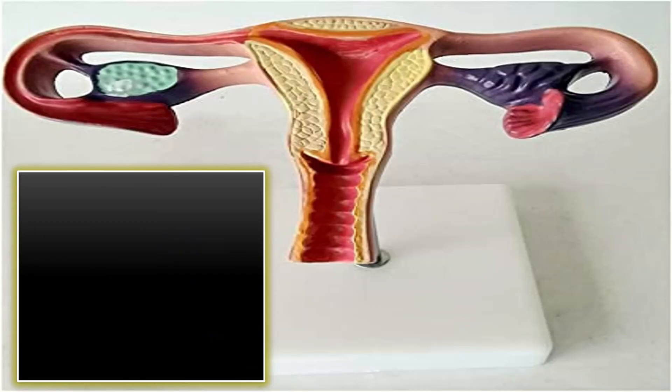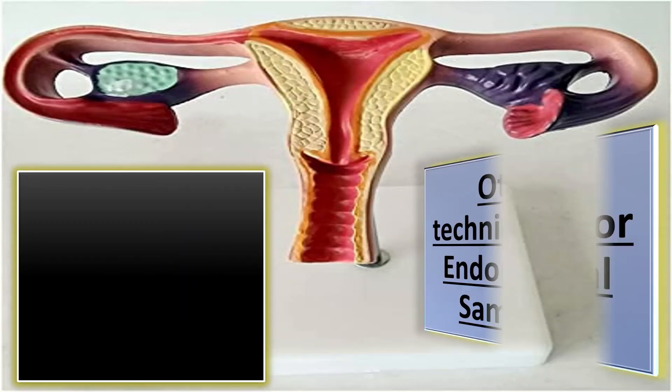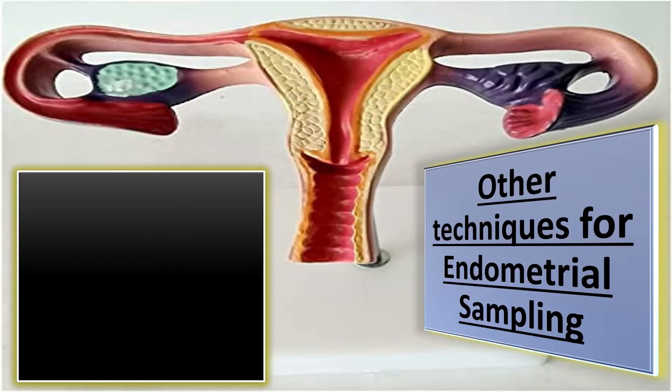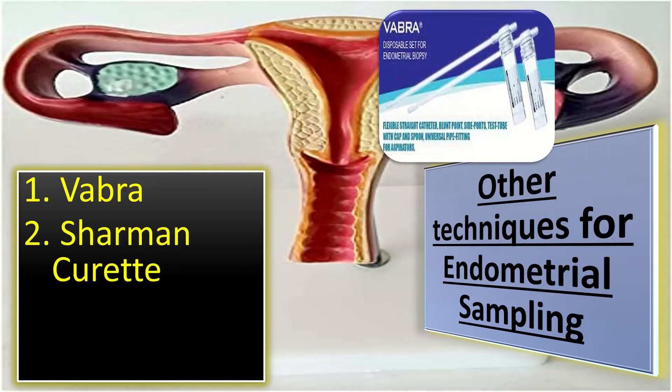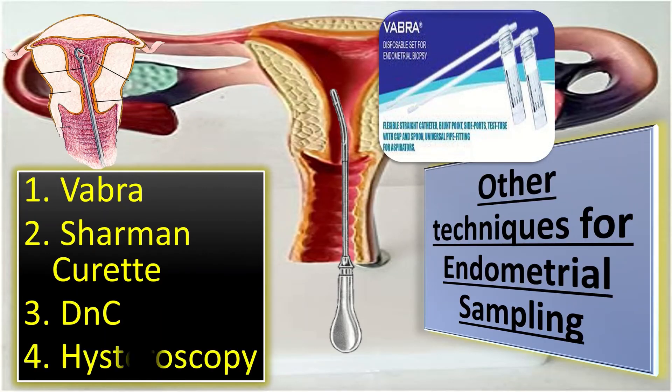Other techniques of endometrial sampling include Vabra aspirator, Sharman curette, D&C (dilatation and curettage), and hysteroscopy.